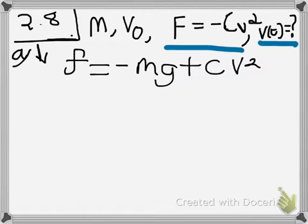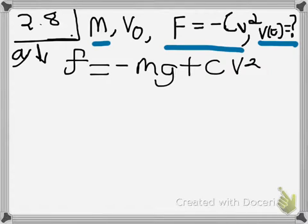In this video, I'm going to work problem 2.8 from Classical Mechanics with MATLAB Applications. This problem gives us a velocity-dependent force, telling us that we have an object with mass m, initial velocity v-naught, and a force equal to negative c times v squared. That is clearly a velocity-dependent force, and the problem asks us to find velocity as a function of time.